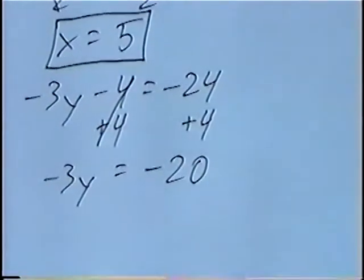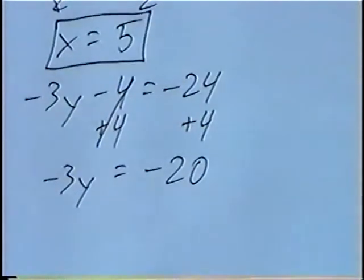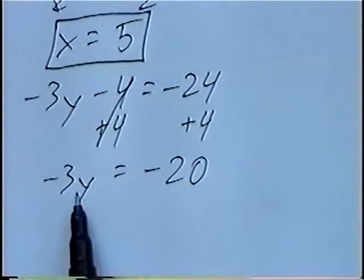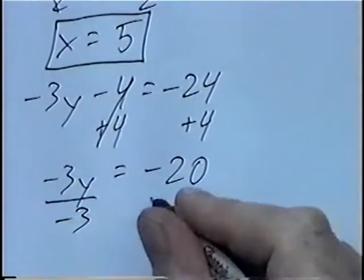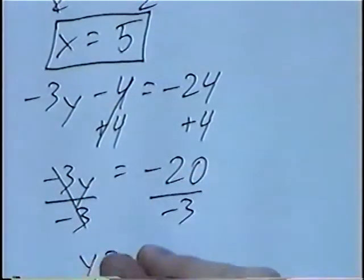Different signs, we'll subtract, negative 24, 24 is a bigger number, so it's negative 20. And last step, negative 3 times y. To get rid of multiplying by negative 3, we can divide by negative 3. So y equals,